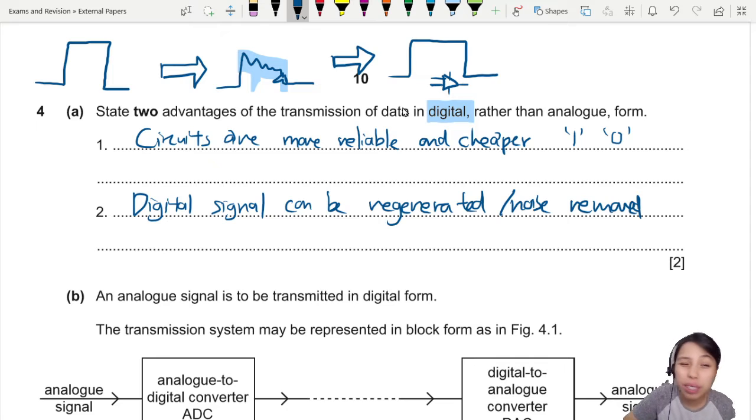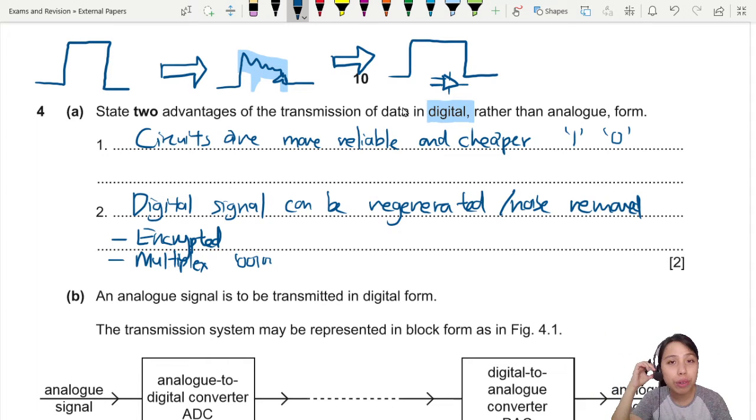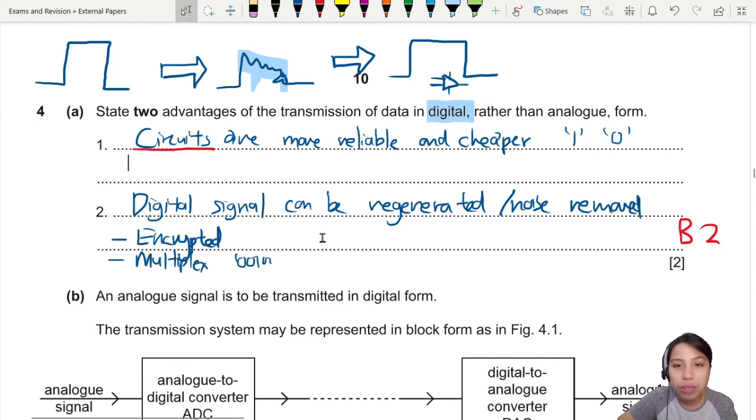I think these are two of the top pros. The other things you can talk about is signal can be encrypted, can be multiplexed. You can send a lot of information at the same time. A whole bunch of 1s and 0s. That's how a lot of the information that we get in our Wi-Fi and phone is transmitted. Anyway, go check those out. All you need is 2 to get a B2 mark. The first one for circuits, you must say the circuits for digital are more reliable and cheaper. The other one can be regenerated. These are the two top reasons why we use digital.